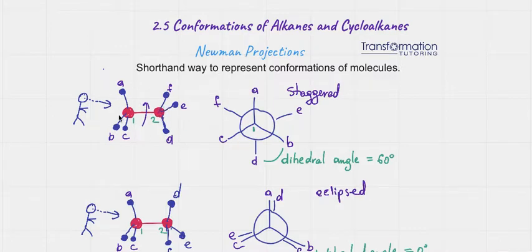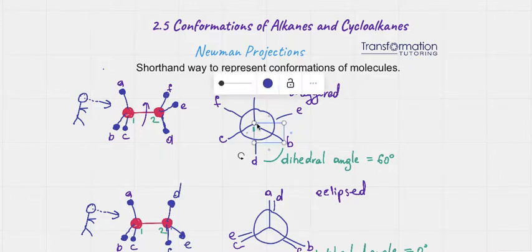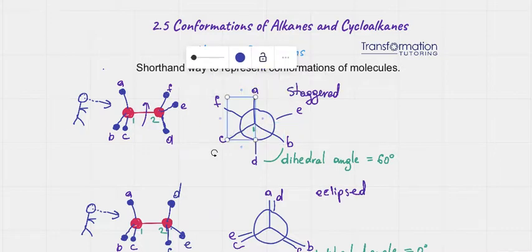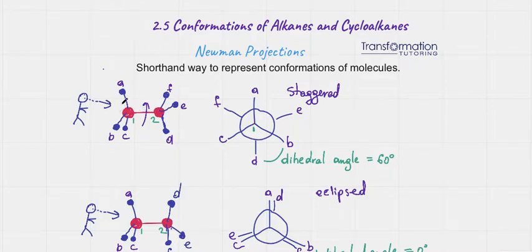How do we represent this molecule by Newman projection? Imagine you're standing in front of the molecule and staring at carbon number one. In Newman projection, this little dot is carbon number one. On top you will see A, so A goes on top. To the right you're going to see B, so B goes to the right. To the left you're going to see C, so C goes to the left.